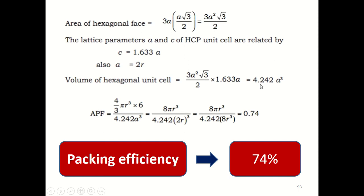Substituting c equals 1.633a, the volume of the unit cell becomes 4.2428a-cubed. Now for the atomic packing factor: (4/3 pi r-cubed times 6) divided by 4.2428a-cubed. Reducing this expression and substituting a equals 2r, you will finally get the value 0.74. So the atoms can fill 74% of the space inside the HCP unit cell, and 26% is empty. Like an FCC crystal structure, the packing efficiency of the HCP crystal structure is the highest compared to BCC and simple cubic structures.